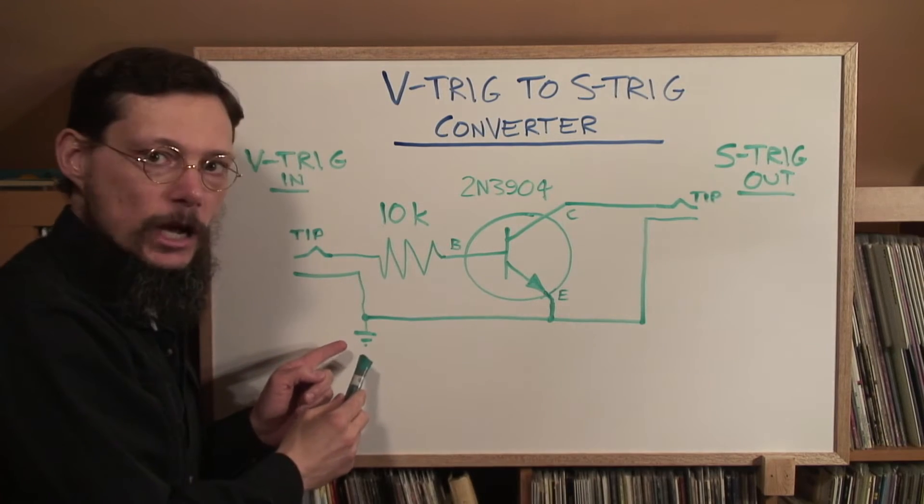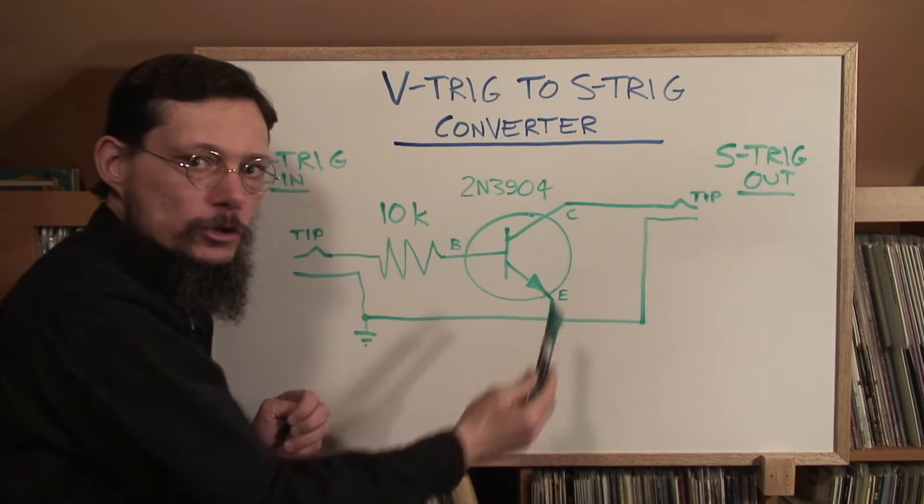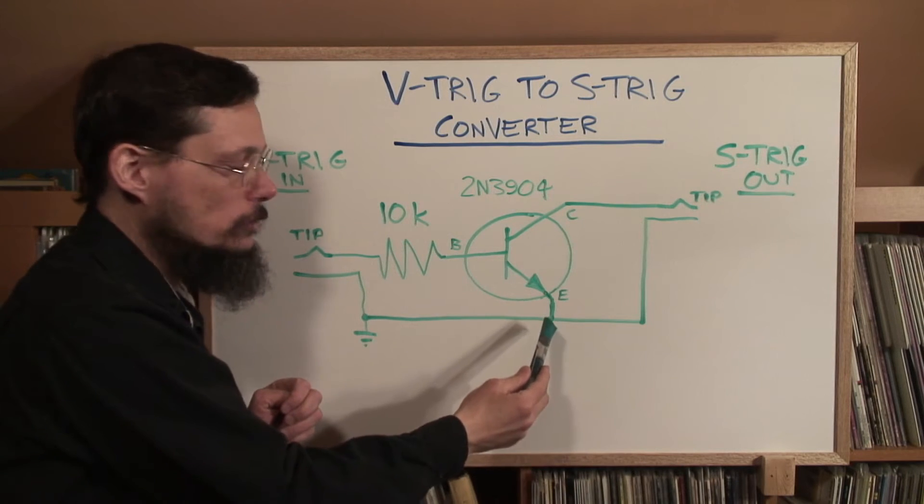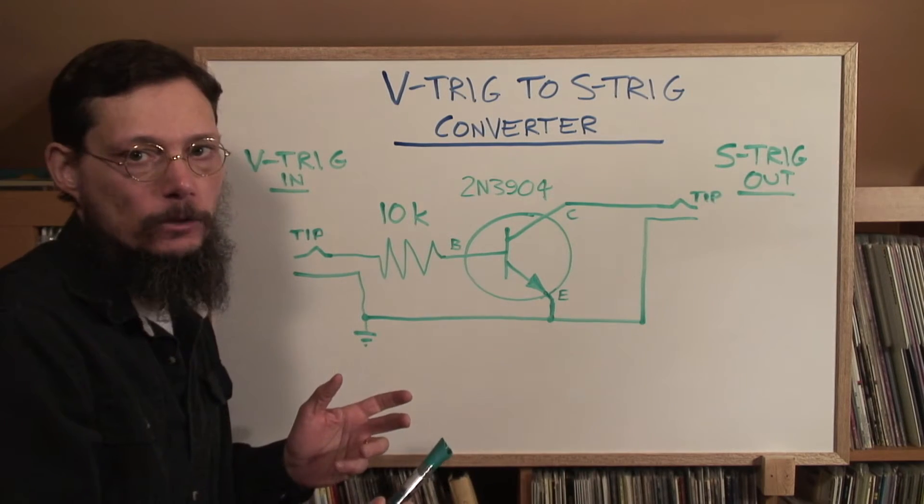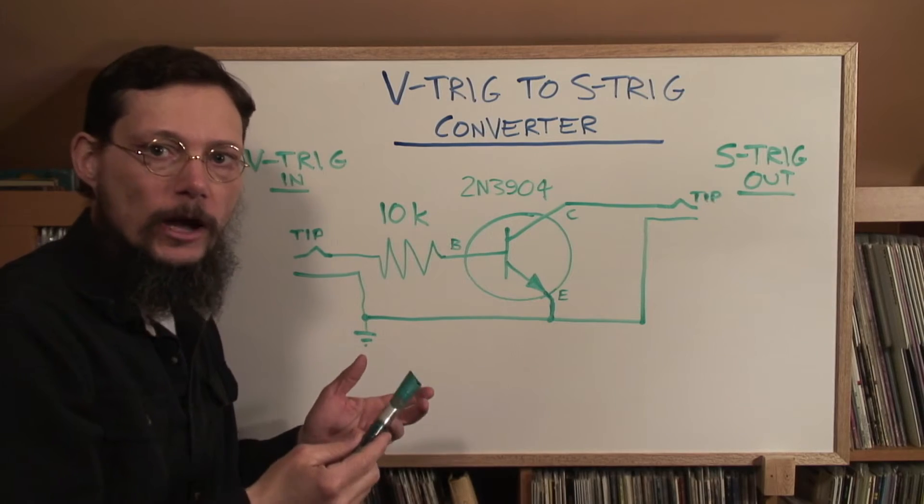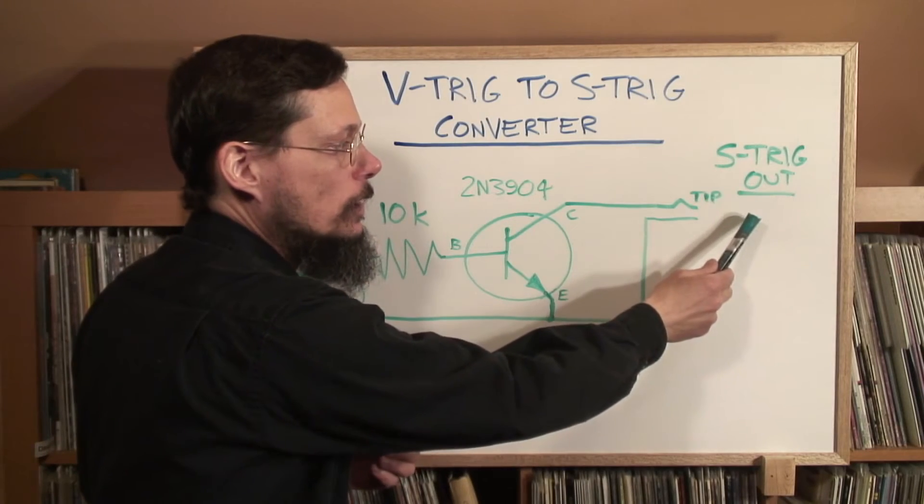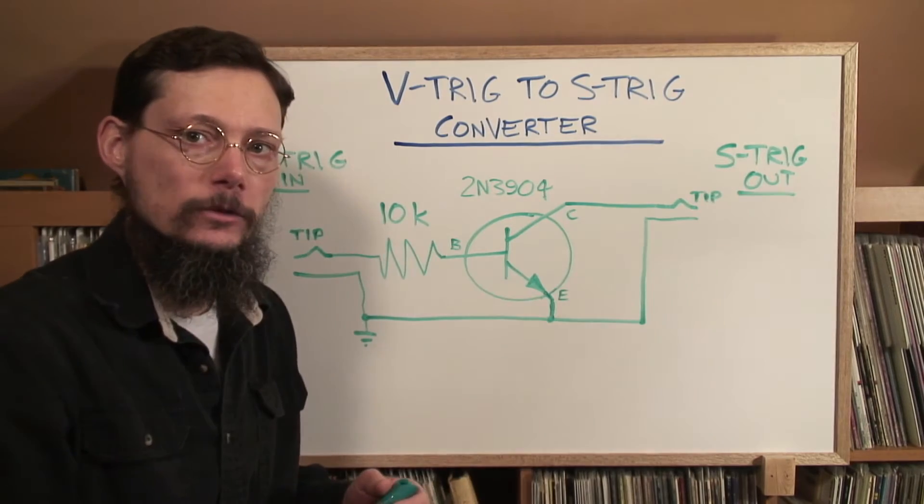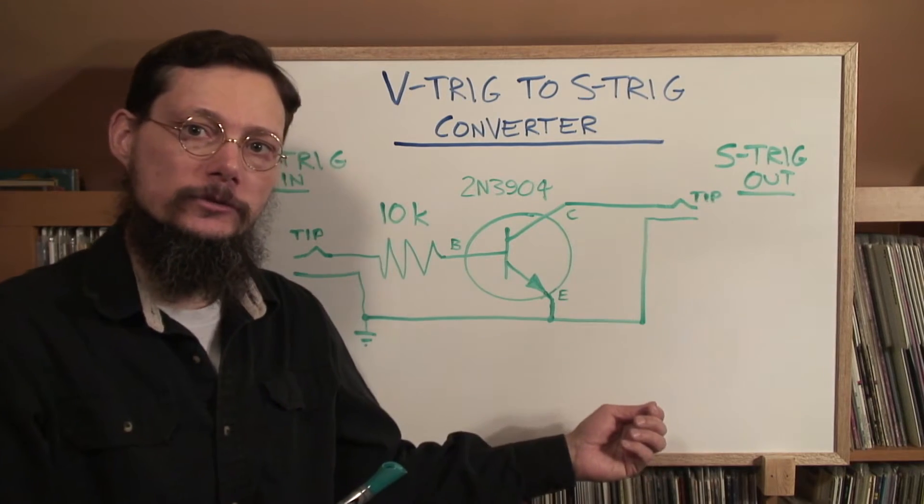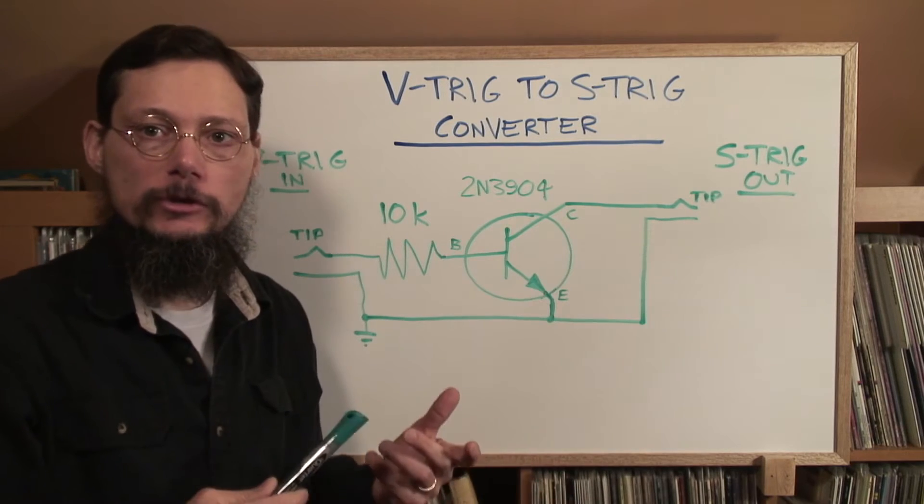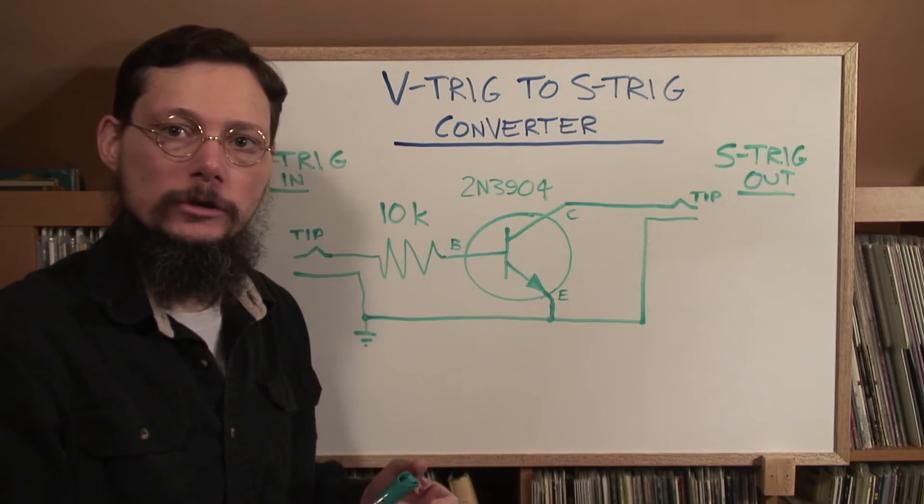Now because the emitter is tied to ground, the collector will be pulled down to within one diode drop of ground, or to about 0.5 to 0.7 volts. The collector voltage will also appear on the trigger line on the S-trig synth. And that voltage is close enough to ground that it considers it a trigger event, and the gate will turn on.